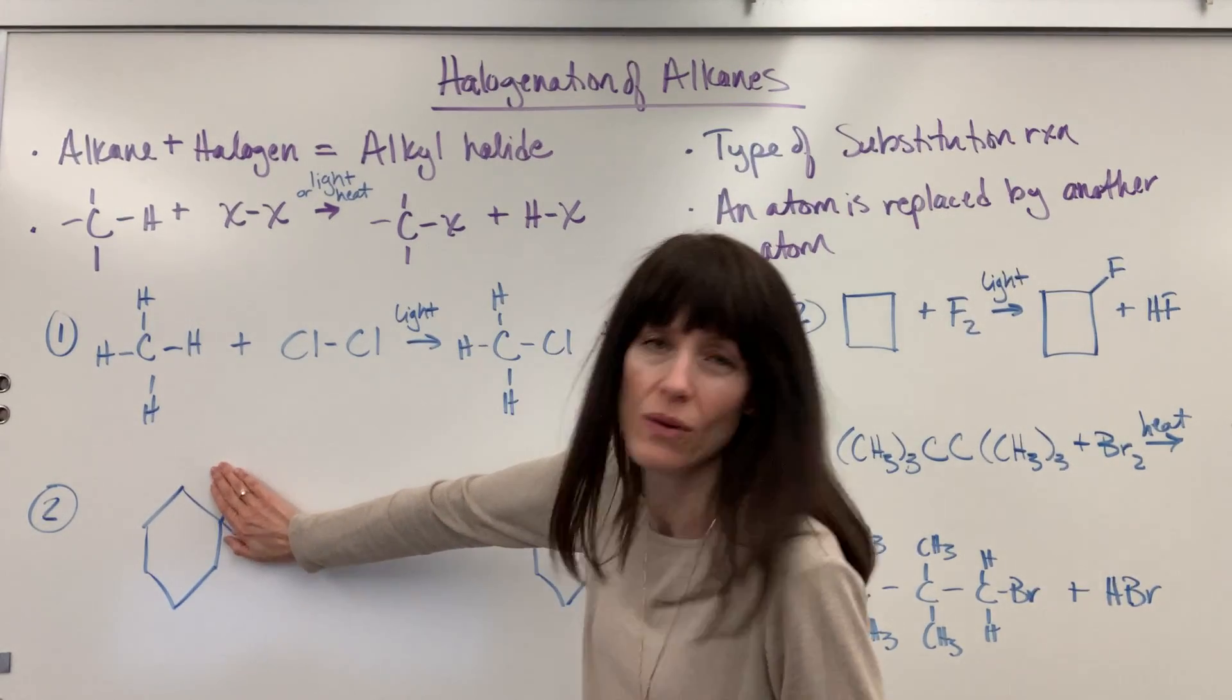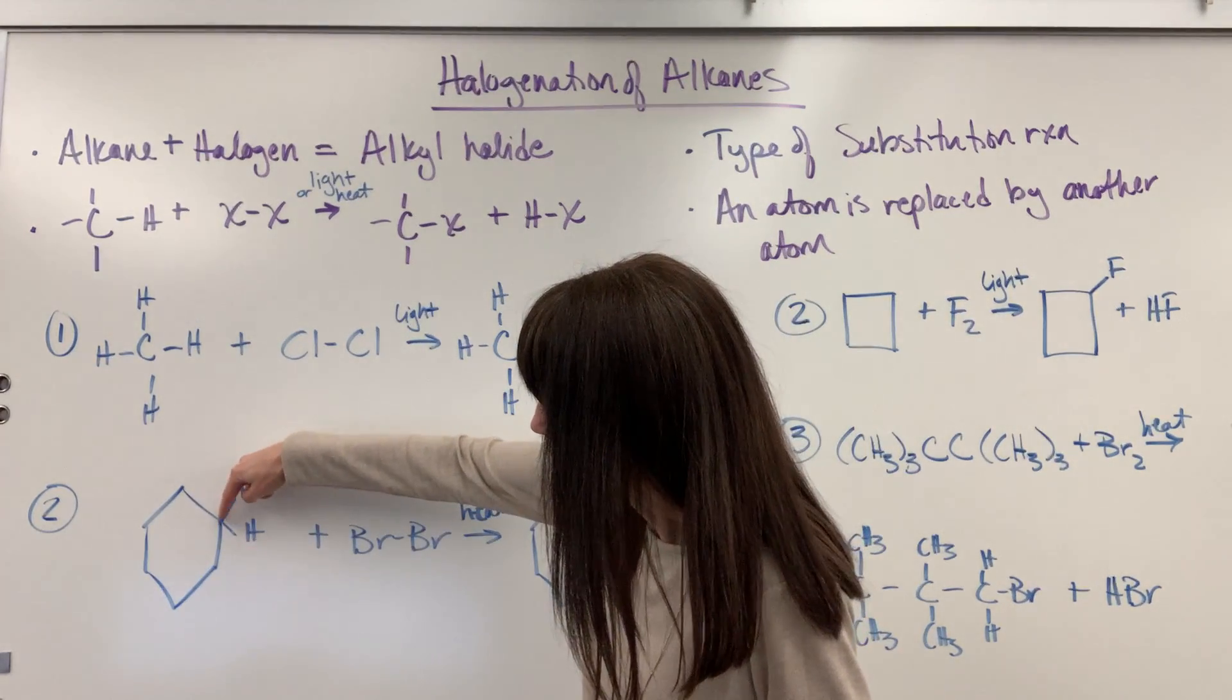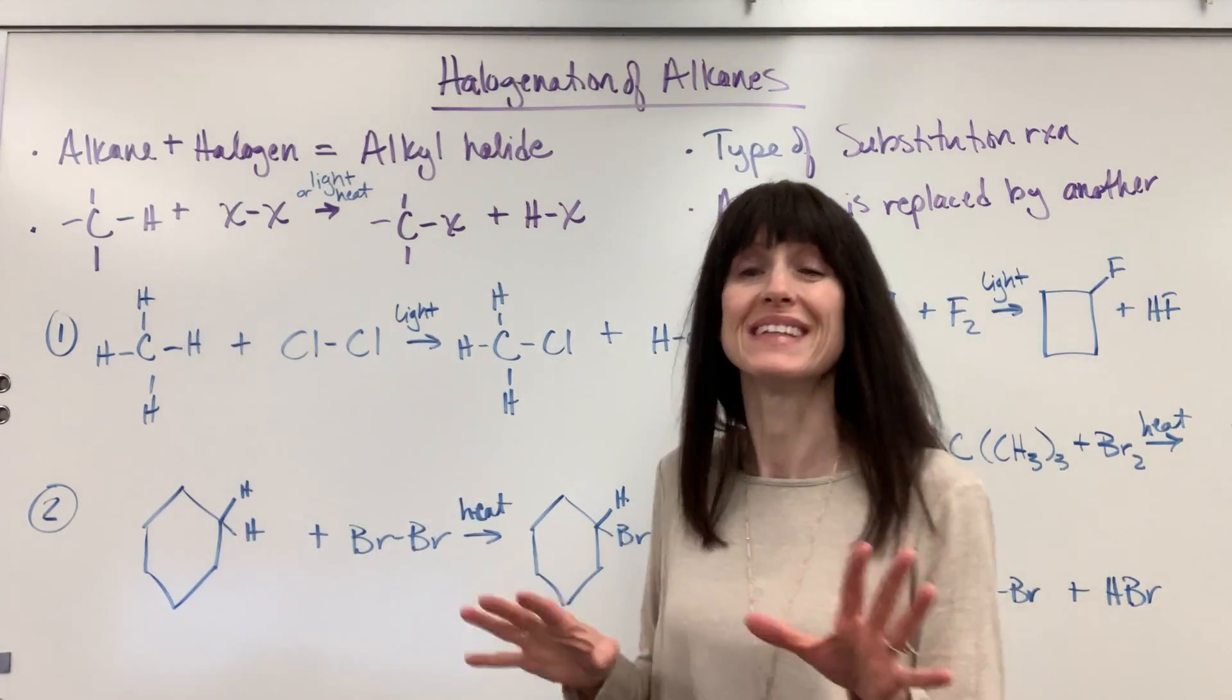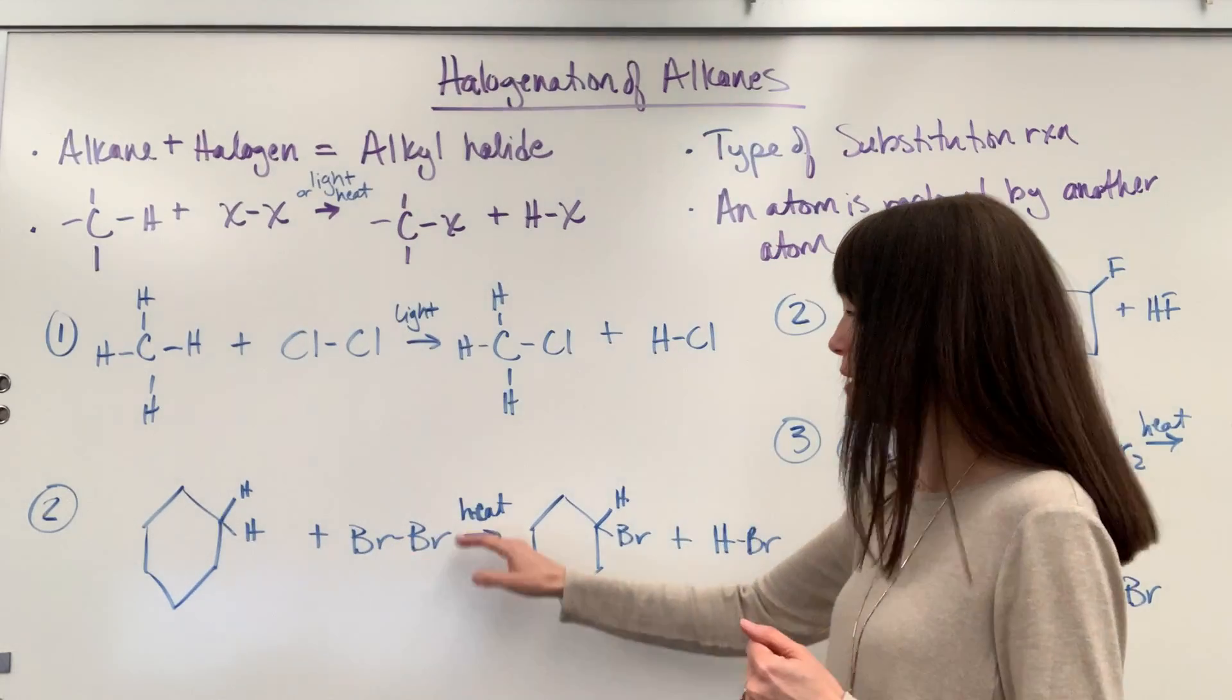You and I both know that we wouldn't draw those hydrogens. You just look at that conjunction, you know, this carbon is bonded to two carbons so it has two hydrogens. I just want you to see this explicitly. So we're going to react this with bromine, a Br₂, add heat.